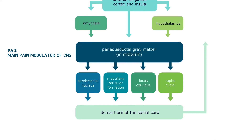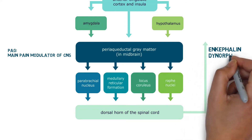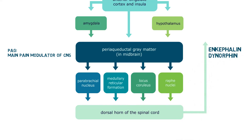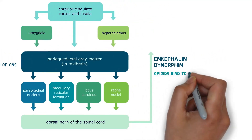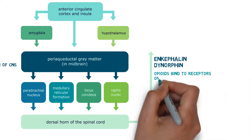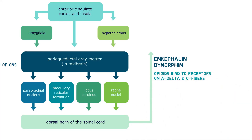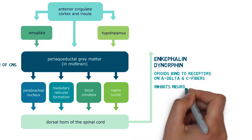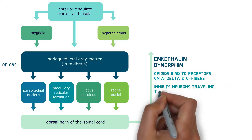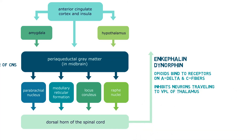At the dorsal horn, the descending pathway will release enkephalin and dynorphin directly onto the synapsing afferent fibers for pain. The endogenous opioid transmitters bind to the mu and kappa receptors on the incoming C and A-delta fibers. This prevents the release of substance P, and thus inhibits the secondary neuron from sending a signal to the VPL of the thalamus, dampening the signal being sent up to the brain through the anterolateral pathway.